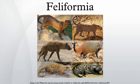Family Nandiniidae is only one species, extant across sub-Saharan Africa. They have retractile claws and are slender-bodied, arboreal omnivores. They are relatively small with the larger males weighing up to 5 kg. Family Prionodontidae has two extant species in one genus. They live in southern East Asia. All are arboreal hypercarnivores. They are the closest living relatives of the family Felidae.